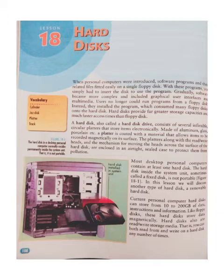And multimedia — users could no longer run programs from a floppy disk. Instead they install the program, which consumes many floppy disks, onto the hard disk. Hard disks provide far greater storage capacity and much faster access times than floppy disks. A hard disk, also called a hard disk drive, consists of several inflexible circular platters that store data electronically, made of aluminium, glass,